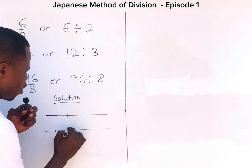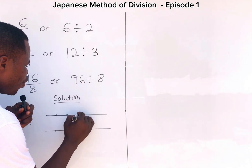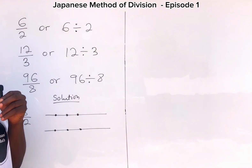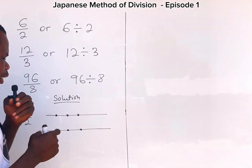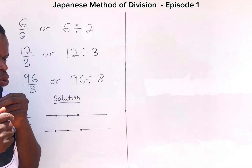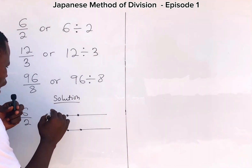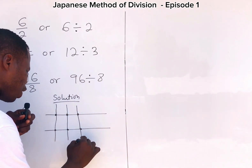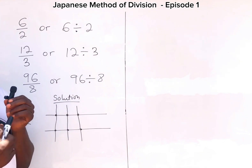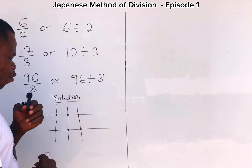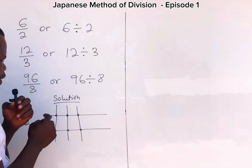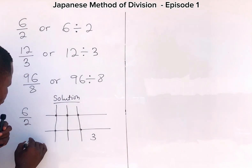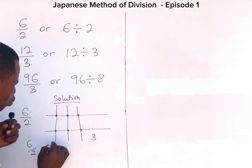You continue placing dots: third point, fourth point, fifth point, sixth point — finishing all six dots on the two lines. After locating the points, you draw vertical lines passing through each column of dots. After drawing the lines, you count the number of vertical lines: one, two, three. So you have three vertical lines, which means that six divided by two is equal to three using the Japanese method of division.